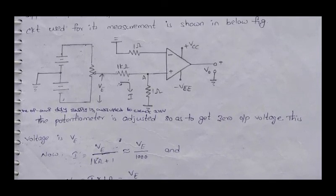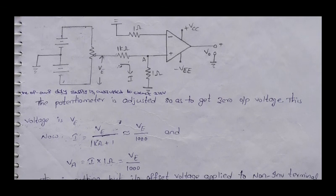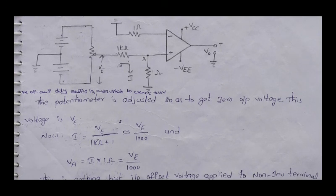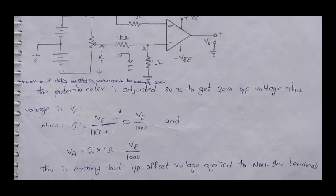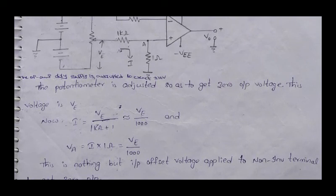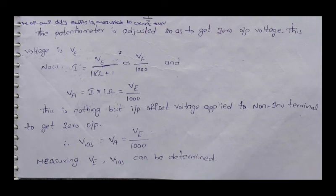In the measurement circuit, we connect the supply voltage to the non-inverting terminal with a potentiometer of plus or minus 10 volts. The potentiometer is adjusted so as to get zero output voltage. This voltage is VE. Using Ohm's law, I equals V by R, so I equals VE divided by 1 kΩ plus 1 Ω, which is nearly equal to VE by 1000 Ω. The input offset voltage equals VE divided by 1000.